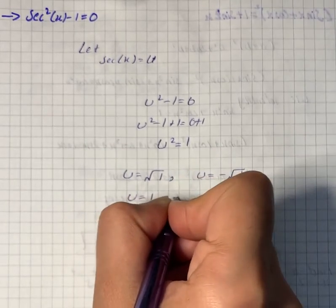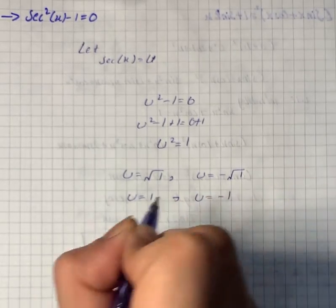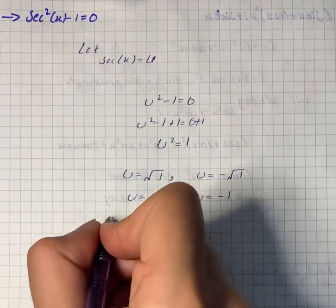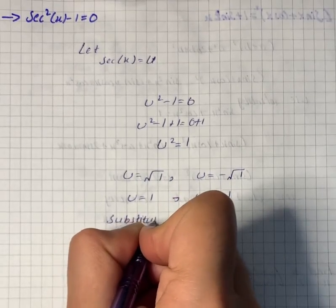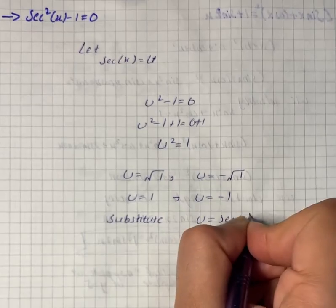So we will have u equals 1 and u equals minus 1. Now we will substitute u equals sec x.